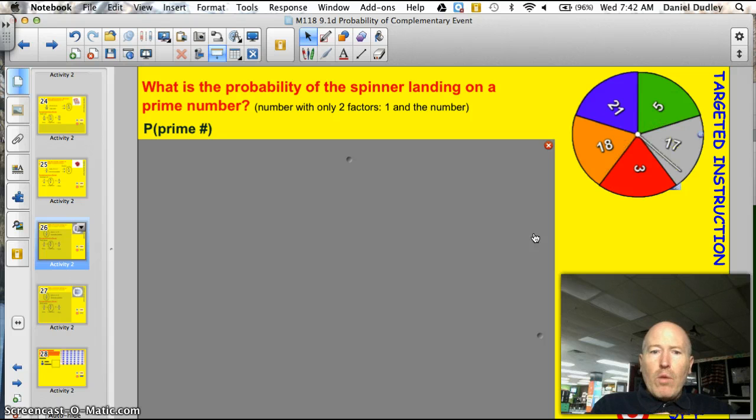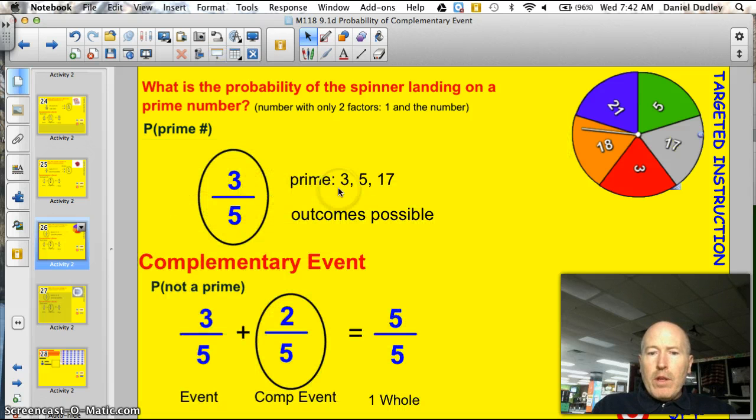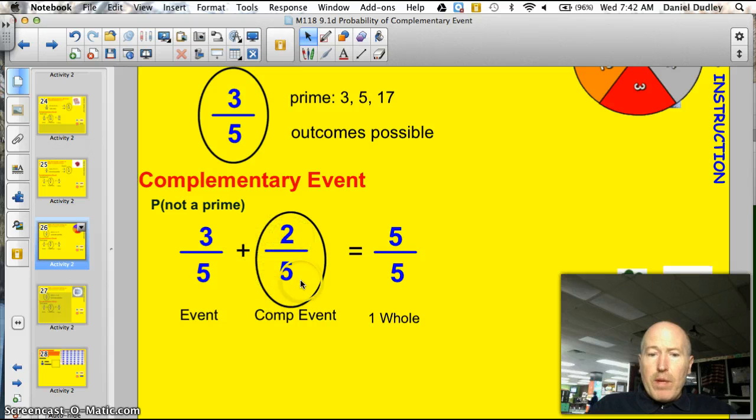Alright, there's my spinner. What's the probability of the spinner landing on a prime number? I'm going to have you do the whole thing. Remember that a prime number is a number with only two factors, like 1 in the number itself, like 11 is prime. The only two factors are 1 and 11. Go ahead and see if you can figure it out. Alright, let's see how you did. Well, these are the prime numbers on the wheel, 5, 17, and 3. 18 and 21 both have 3 as a factor, so they're not prime. So, these are my prime numbers, and I had a total of 5. So, 3/5 was my probability of drawing, of spinning a prime number. The complementary event, then, would be 2/5. It's going to be the opposite of that. I bet you got that right.